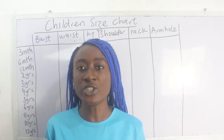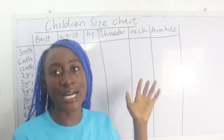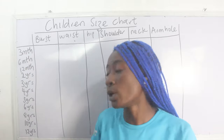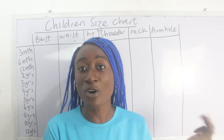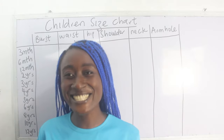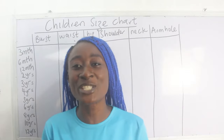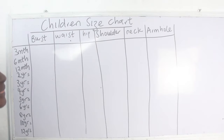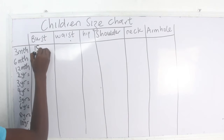The basic measurements required when dealing with children's dresses are: bust, waist, hip, shoulder, neck, and armhole. We'll be covering these from three months to 12 years. Don't forget to join us on Facebook — Silly Designs — and on Instagram — TG Designs. All the details will be in the description box below.